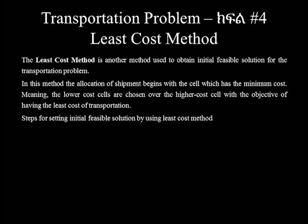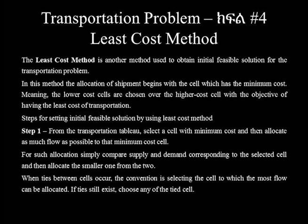Step 1: From the transportation table, select a cell with a minimum cost, and then allocate as much flow as possible to that minimum cost cell. For such allocation, compare demand and supply corresponding to the selected cell, and then allocate the smaller one from these two.